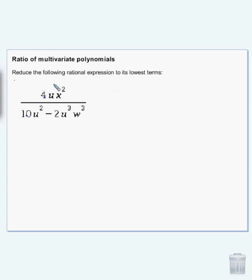In order to reduce a rational expression to its lowest terms, we first need to find the greatest common factor of all of our terms.